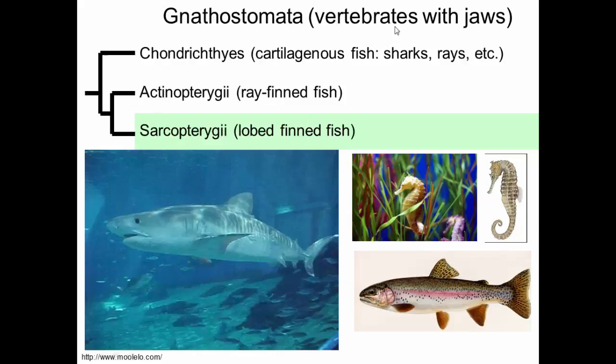Within Gnathostomata — vertebrates that have jaws — our hagfish and lampreys did not have lower jaws. Gnathostomes: 'gnath' means bite, 'stome' means mouth, so these are biting mouths. The basal group here are Chondrichthyes — fish that have cartilage, such as sharks, rays, et cetera. They don't have bone, but they don't really need bone because they're living in the water all the time. You don't really need a super strong supportive structure if you're spending all your time in an aqueous environment where you don't need to fight gravity very much.